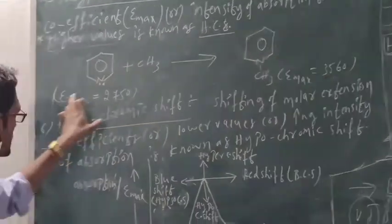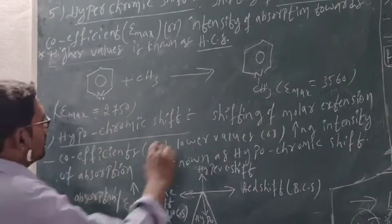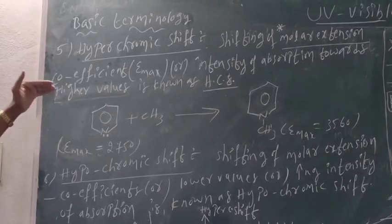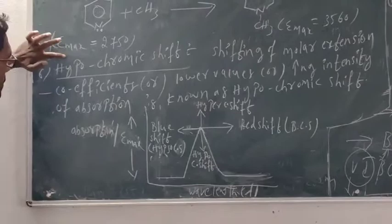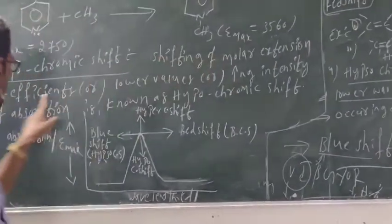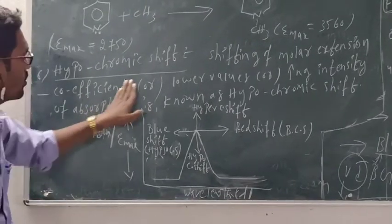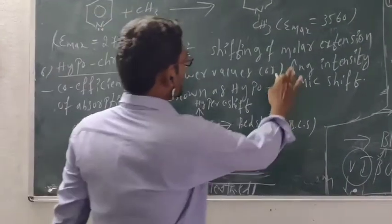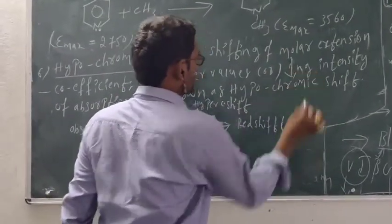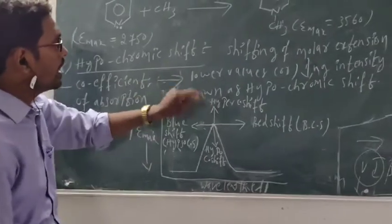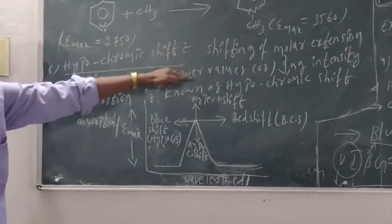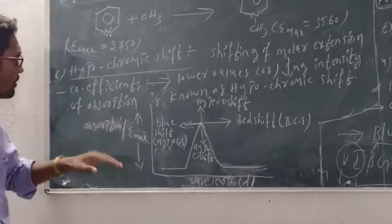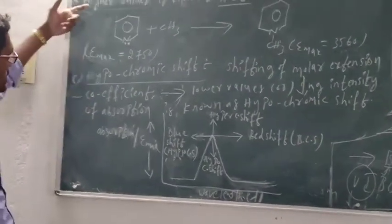The last term: hypochromic shift. Hypochromic shift is the shifting of molar extinction coefficient towards lower values — meaning the intensity of absorption decreases. This is known as hypochromic shift. It is quite opposite to hyperchromic shift.